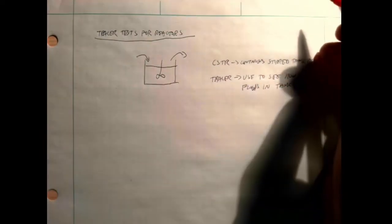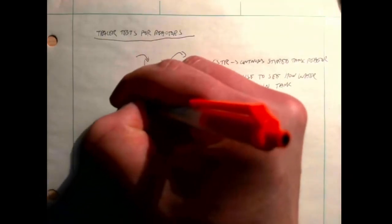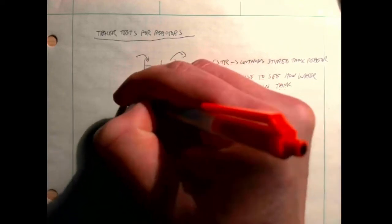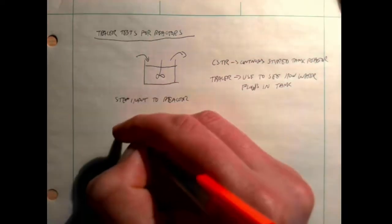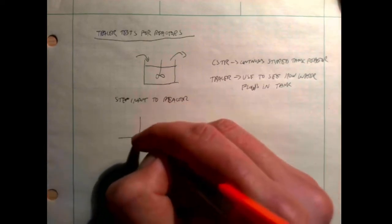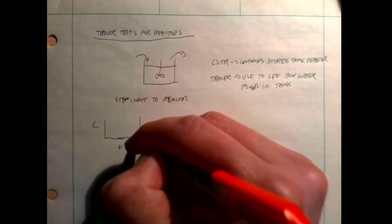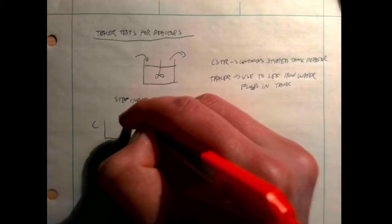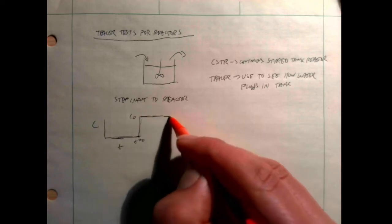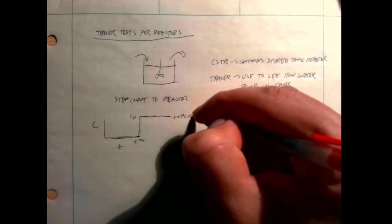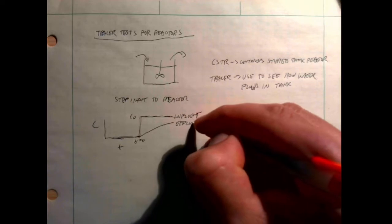We can then use that to figure out the characteristics of the reactor. That's a tracer test. We typically use what's called a step input to the reactor, which means at t equals zero we're going to suddenly step up the concentration to C₀ and hold it there as our influent, then measure what's coming out.